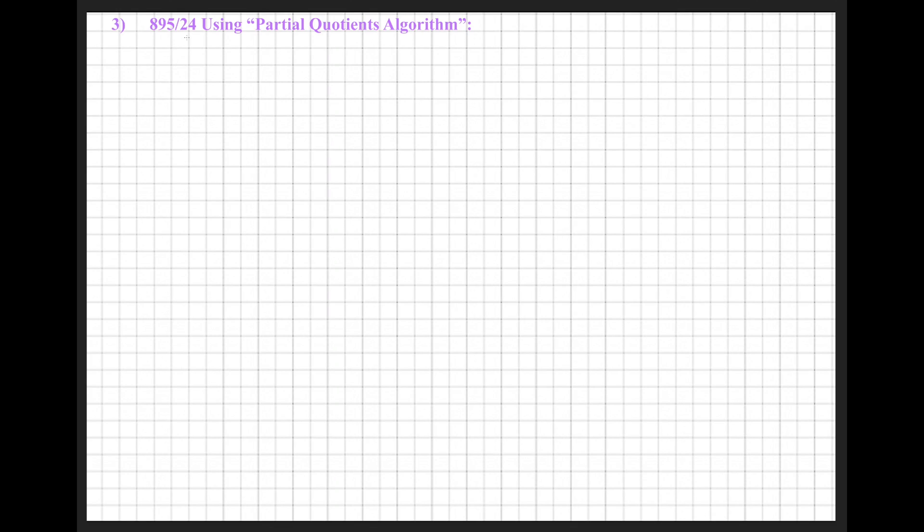Okay, so we are going to start with 895 divided by 24 using our partial quotients algorithm. The first thing that I'm going to do is draw 895 divided by 24.